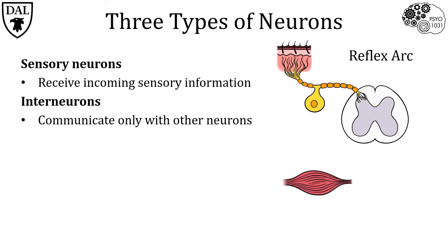Back to our cutaneous reflex arc: interneurons are located in the spinal cord and receive inputs from the sensory neurons. They then make connections with other neurons in order for the sensory messages to get transmitted to the brain.